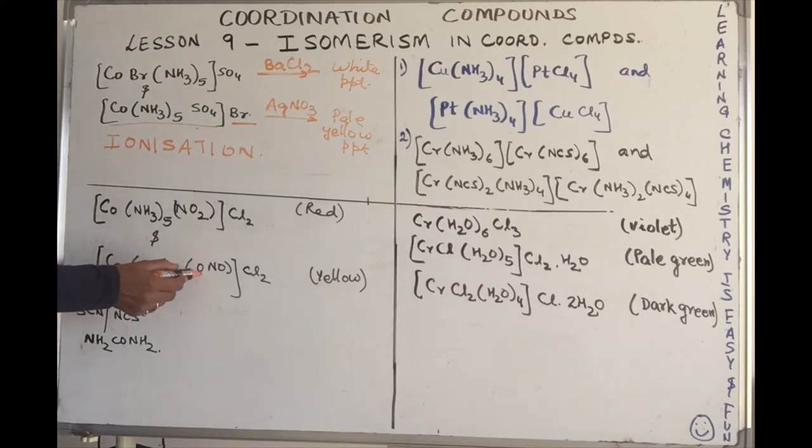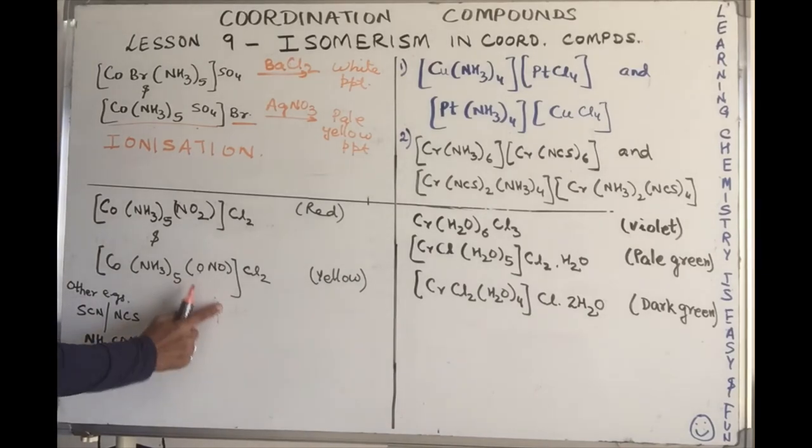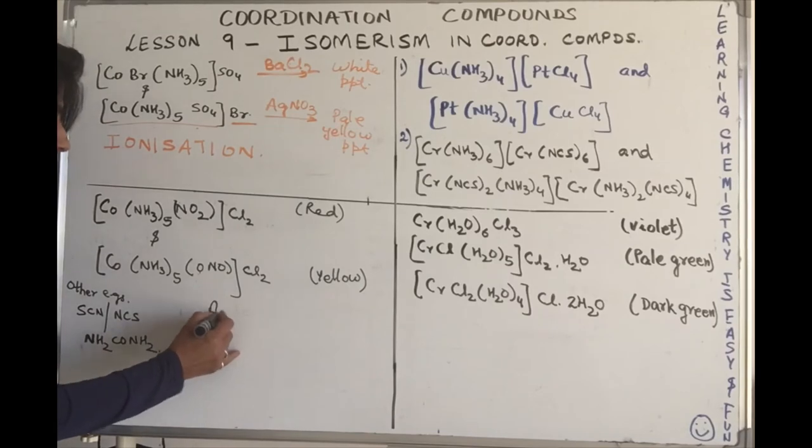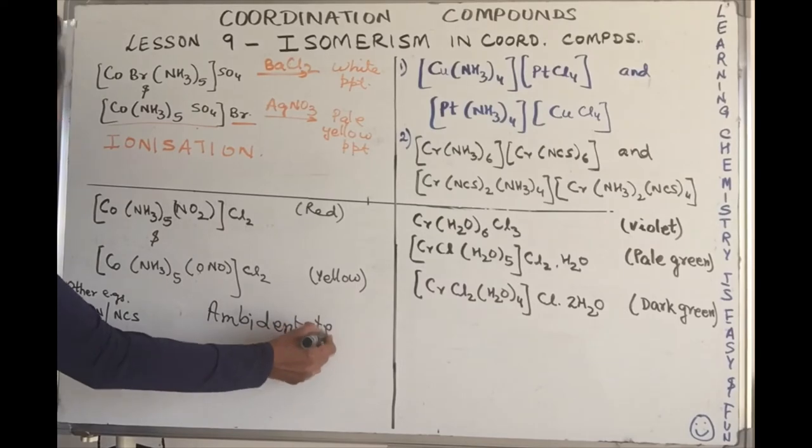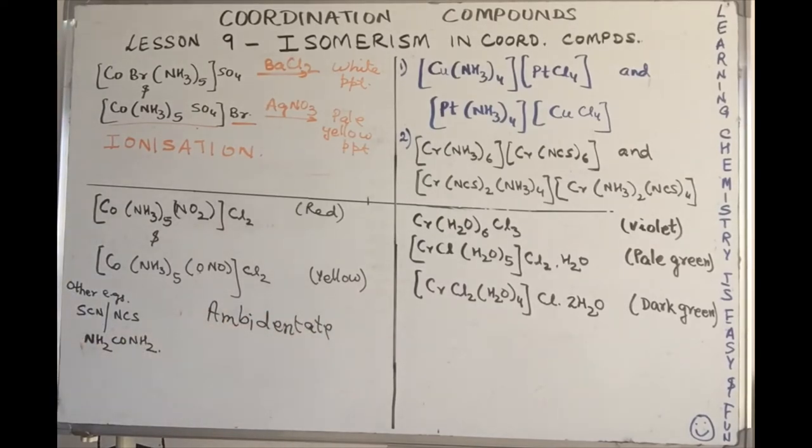So what isomerism is this? The linkage groups are different. What type of groups will show this kind of isomerism? Very good, it's ambidentate ligands which will show this type of isomerism. Two teeth, they can bite through two ends, two different ends, but they are unidentate. They can donate from any of the two donor atoms.